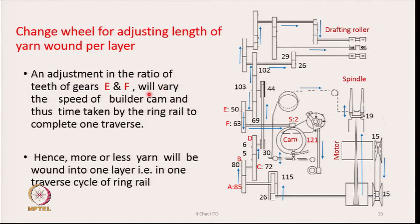Adjusting the ratio of gears E and F varies the speed of the builder cam and thus the time taken by the ring rail to complete one traverse. More or less yarn wound into one layer depends entirely on the ratio of gears E and F.